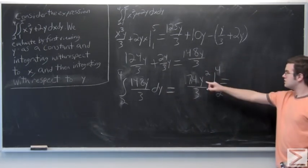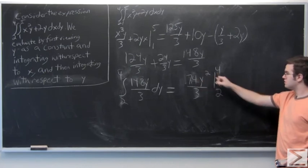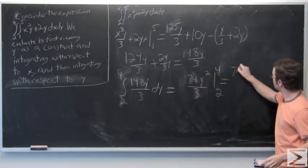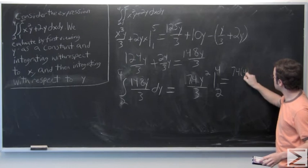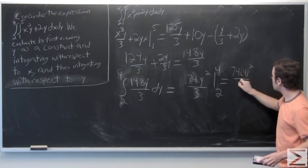Okay, so 74 times 4 squared, all over 3.